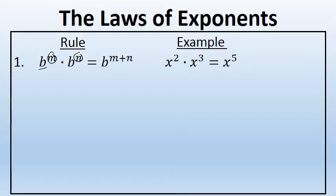When you're multiplying two factors that have the same base, the exponents can be added. For example, x to the second power times x to the third power. The base is the same — both are x. The exponents are added and we get x to the power of 5.